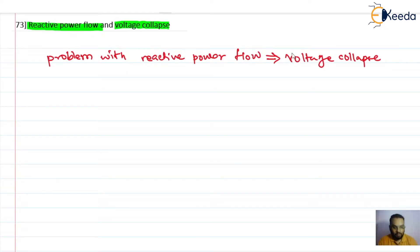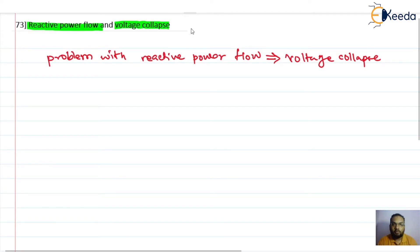Now let us discuss some situations in the power system where we can experience the problem with reactive power flow. The very first problem we can have is in the long transmission line.